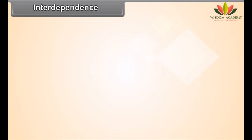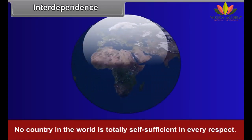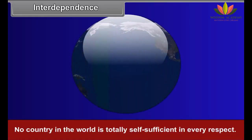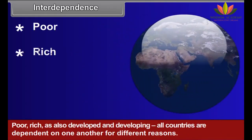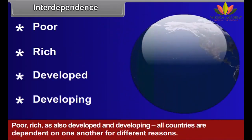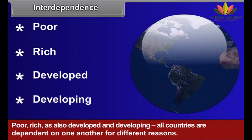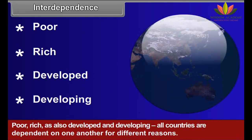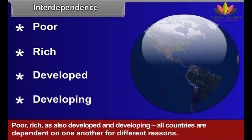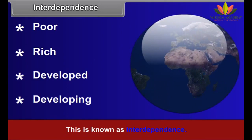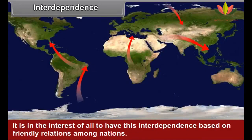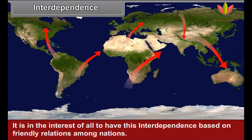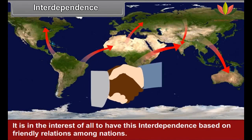Interdependence. No country in the world is totally self-sufficient in every respect. Poor, rich, as also developed and developing — all countries are dependent on one another for different reasons. This is known as interdependence. It is in the interest of all to have this interdependence based on friendly relations among nations.